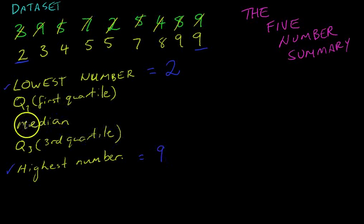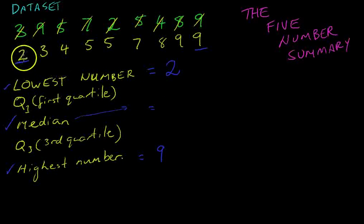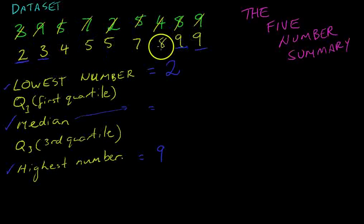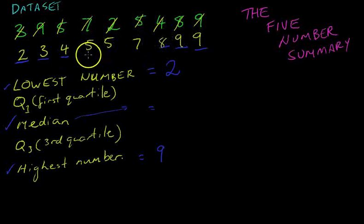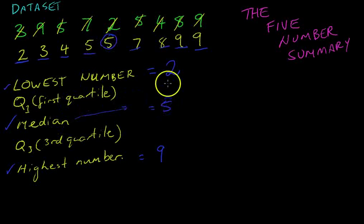Now the other one I'm going to jump to straight away is the median. The median is really easy — we've looked at it before, it's the middle number. So working inward: 2, 9, 3, 9, 4, 8, 5, 7 — here's our median, the number 5.